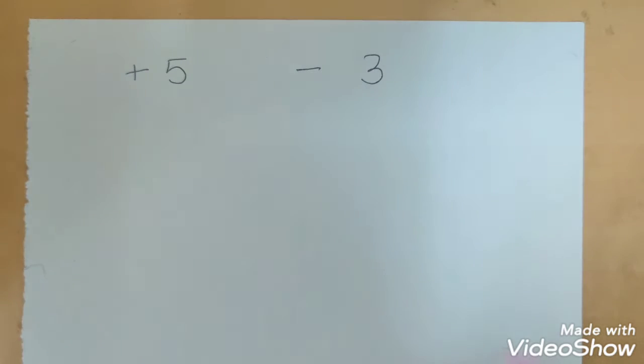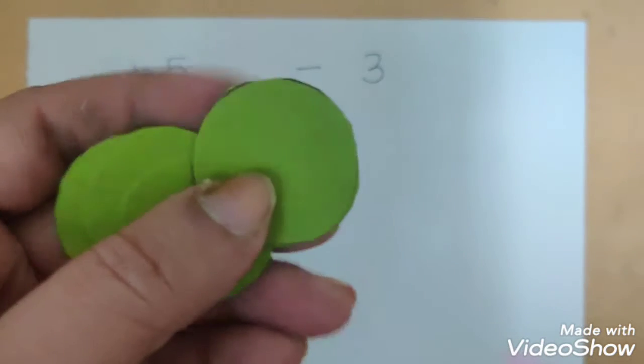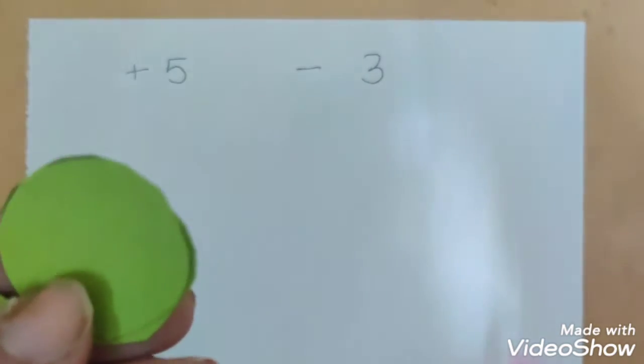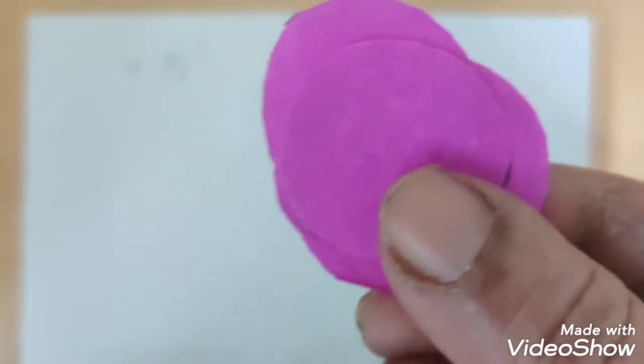Let us look at the question of plus 5 minus 3. Now, we have certain circular cutouts of green color and let us say of pink color.